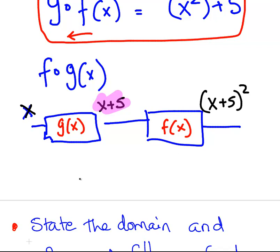So f of g of x equals x plus 5 squared. Or in other words x squared plus 10x plus 25. So this is very much the opposite case.